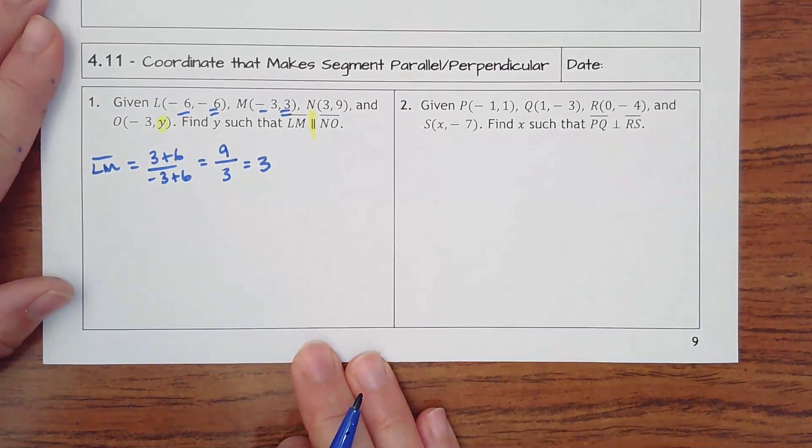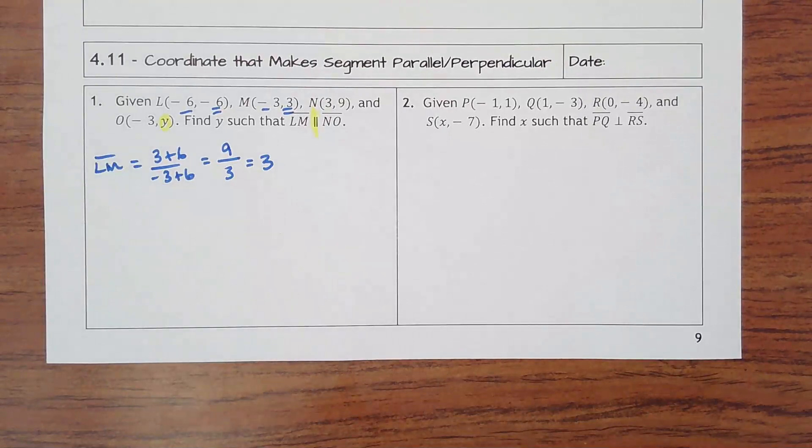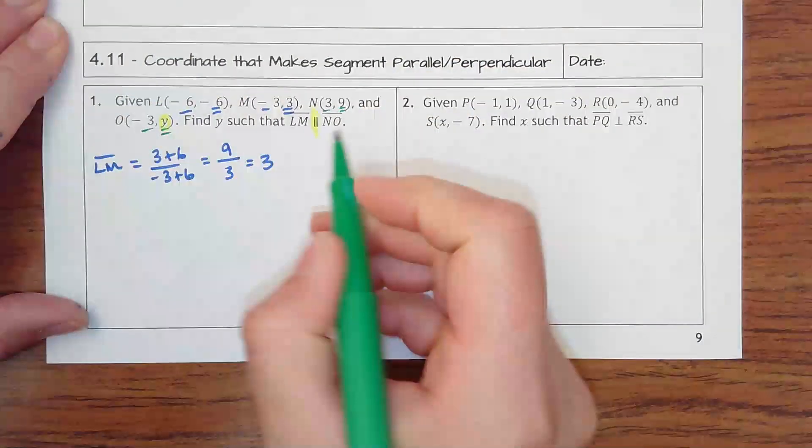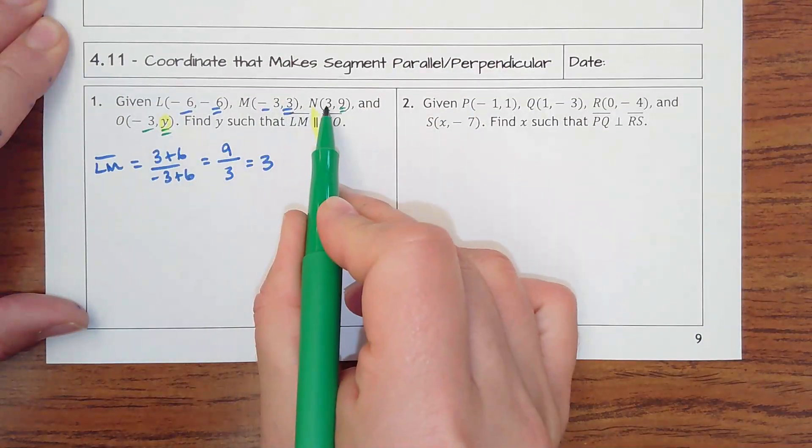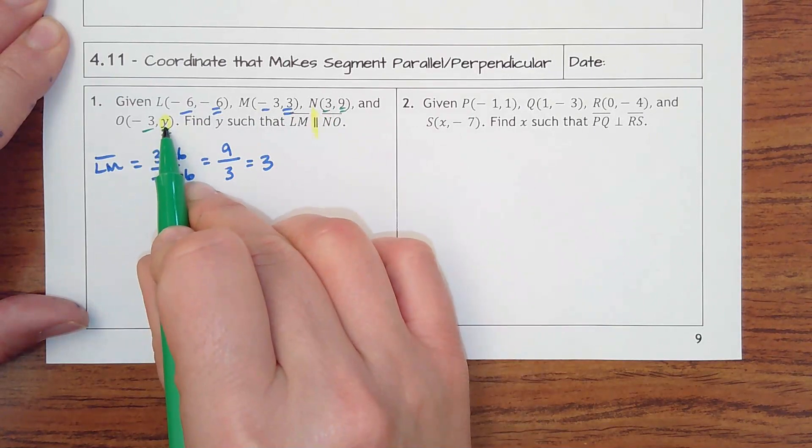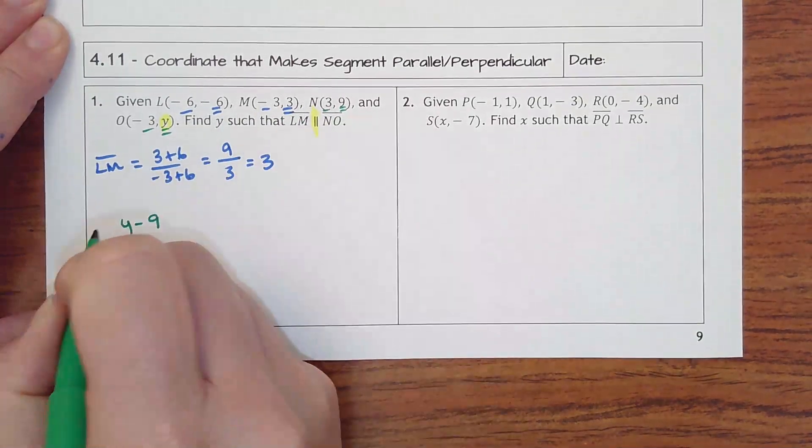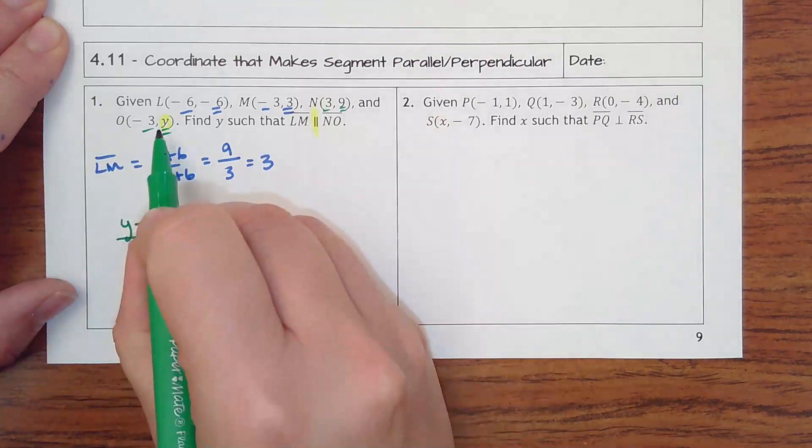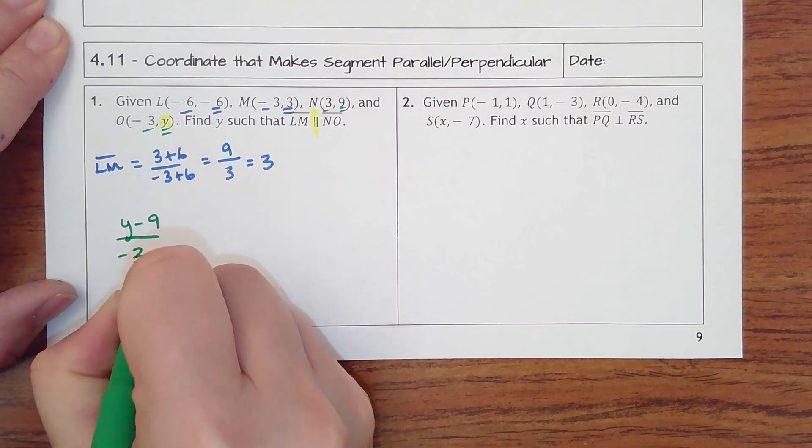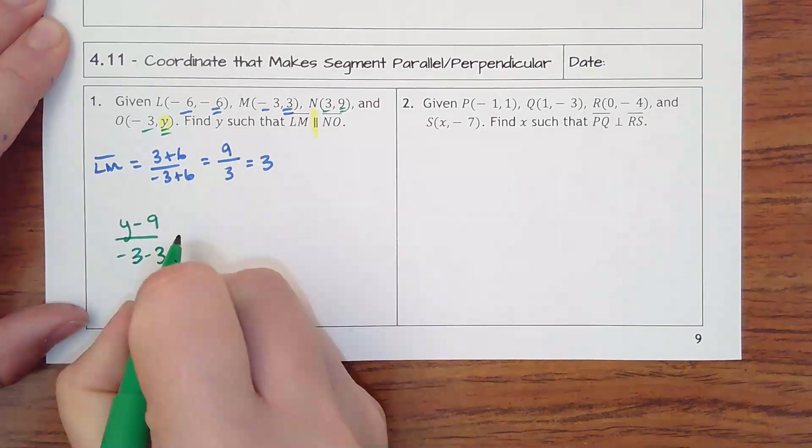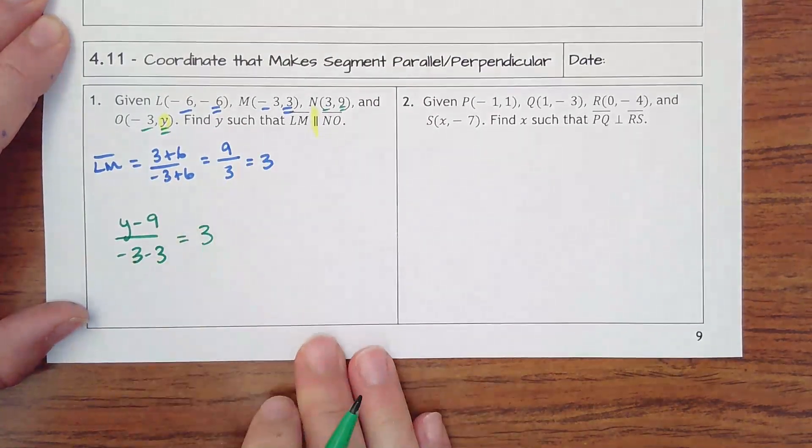So what I want to do now is make another slope equation. I'll get a different color. For N to O, so I would have Y minus 9 over negative 3 minus 3. And what do I want this slope to come out to be? Well, I want it to come out to be the same as LM, which was 3.